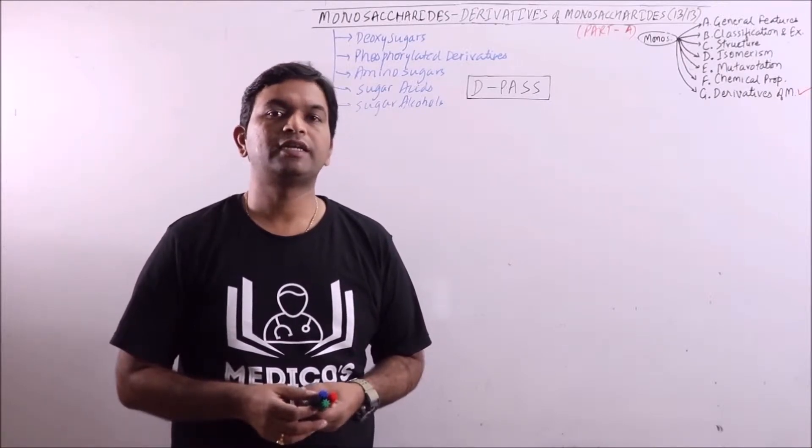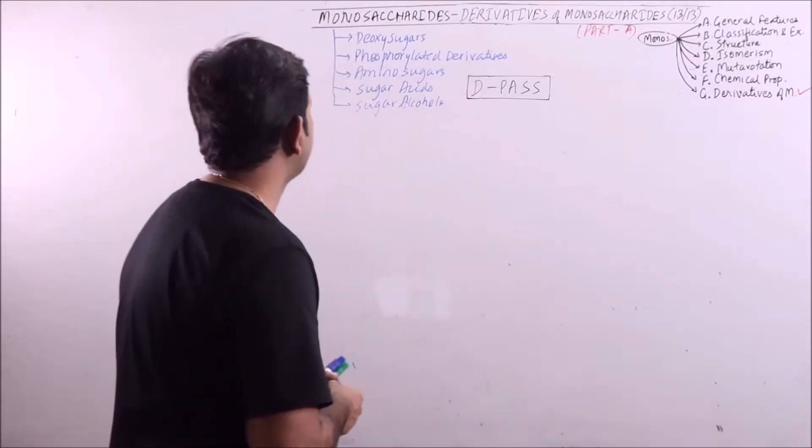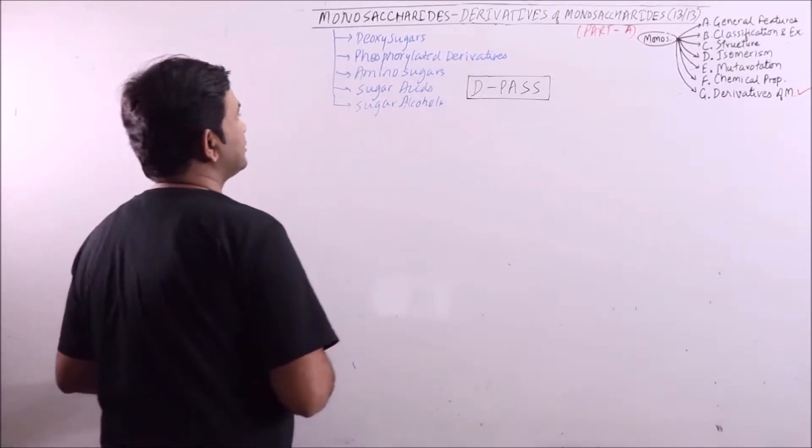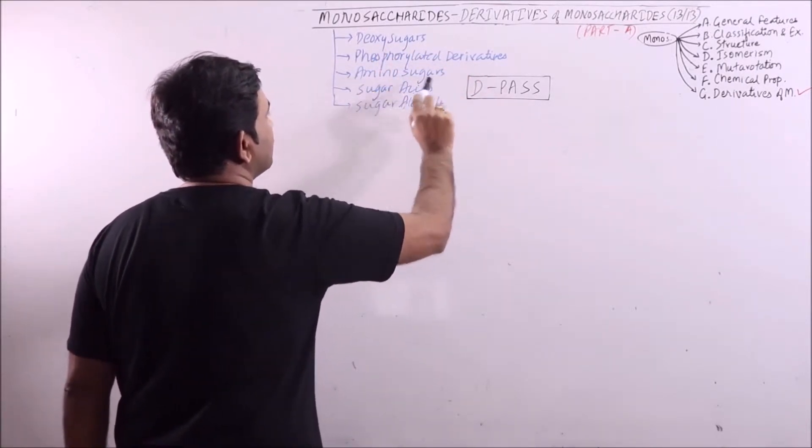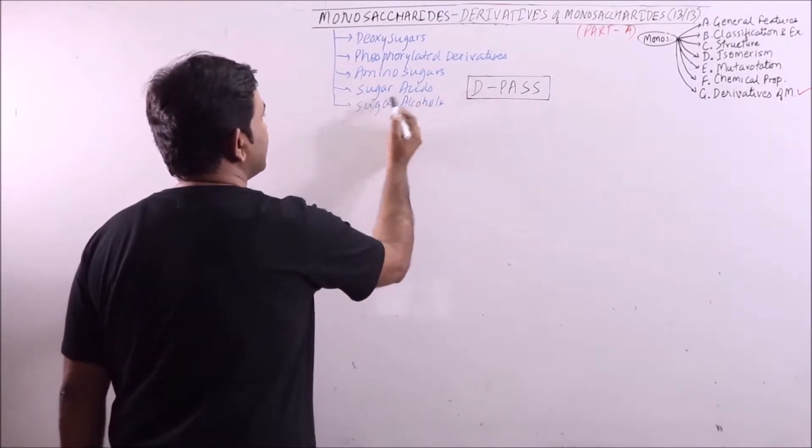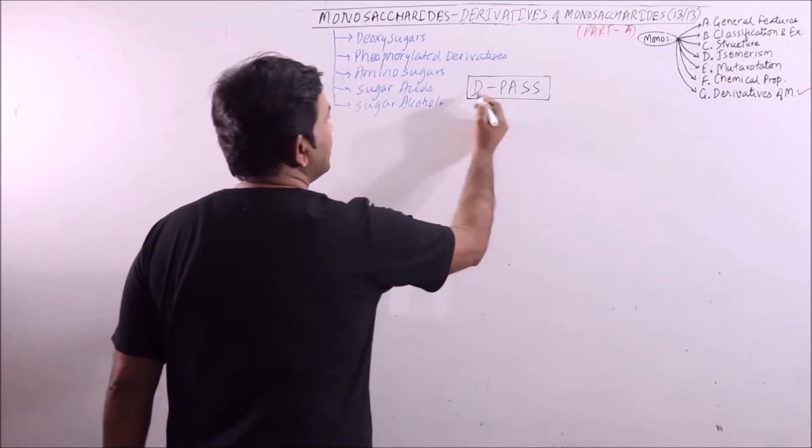In this video, I am going to discuss the derivatives of monosaccharides. There are five minor categories of derivatives of monosaccharides. First one is deoxysugars, second one is phosphorylated derivatives, third one is aminosugars, then sugar acids and sugar alcohols. We can learn them by D-PASS.